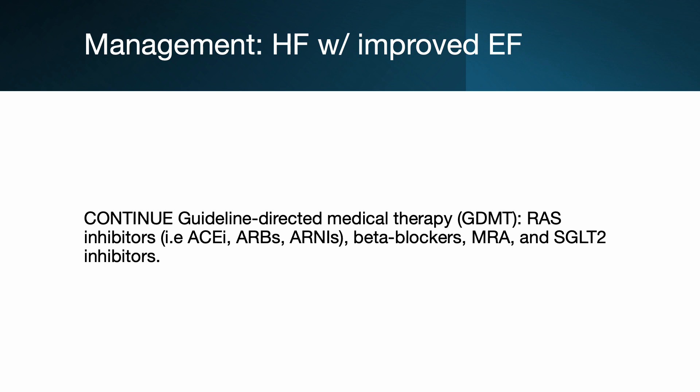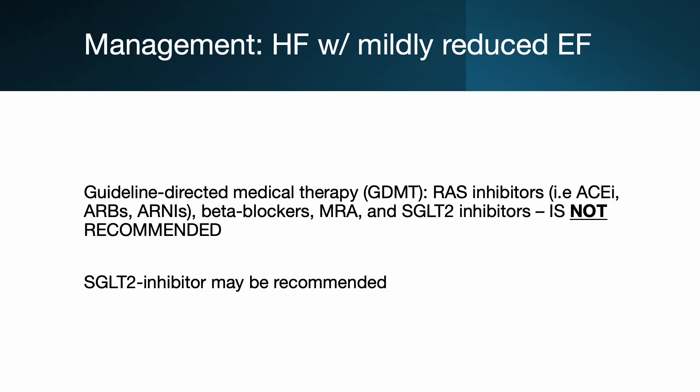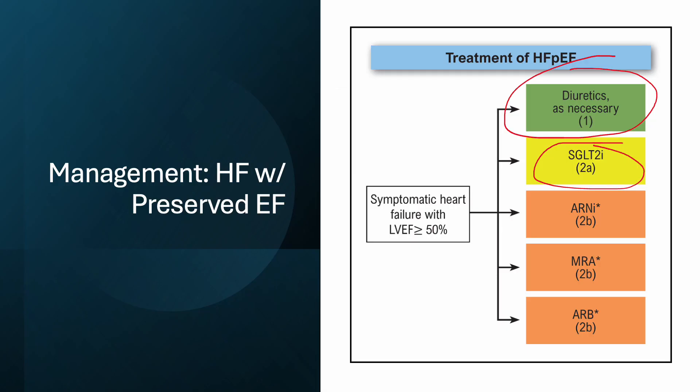In patients with heart failure with improved ejection fraction, the recommendation is to continue current guideline-directed medical therapy indefinitely, even when ejection fraction improves to more than 40%. For heart failure with mildly reduced ejection fraction (ejection fraction between 41% and 49%), GDMT is not routinely recommended, although new research has shown SGLT2 inhibitors may be beneficial in this population.